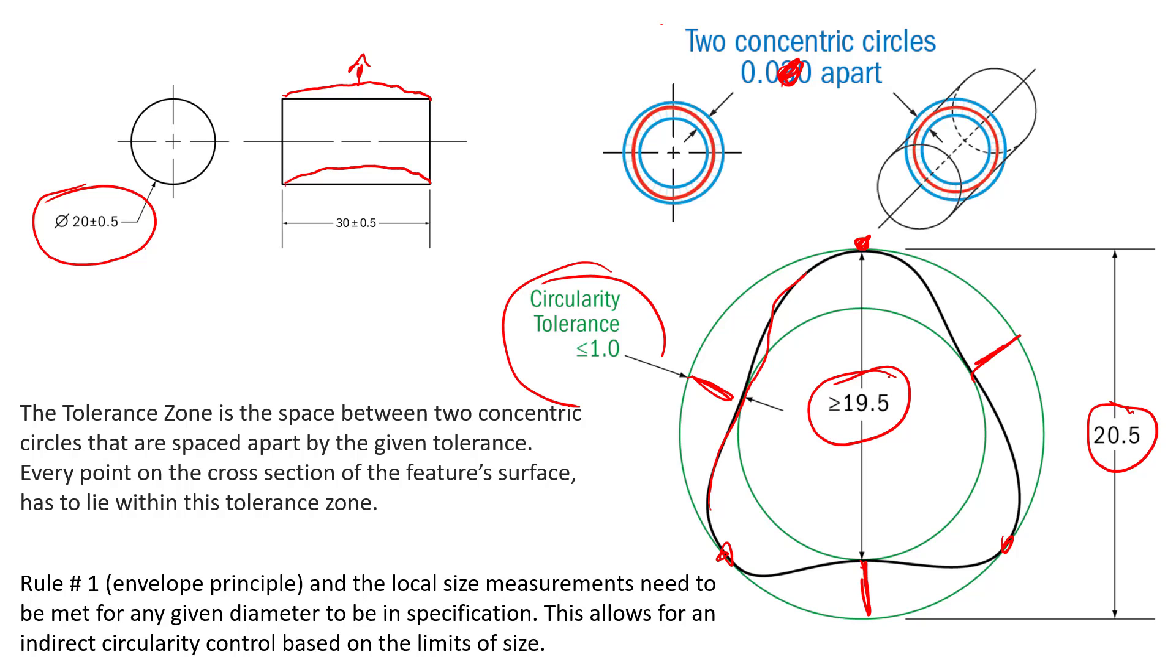So just remember that whatever this tolerance is here, that size tolerance, the total size tolerance, if there is no refinement on here of circularity, which this one isn't, rule number one is controlling all of the form error. That size tolerance is controlling circularity as well. So it's not divided by two. That is the total allowance, like I said. So one millimeter out here, and that's at any given point all the way around here. But remember, we can never violate MMC or LMC. But we don't divide it by two. It's the total tolerance allowed on there.